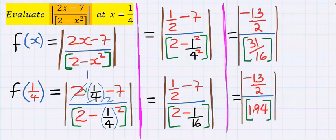If you solve this carefully, you are going to get minus 13 over 2 at the numerator.